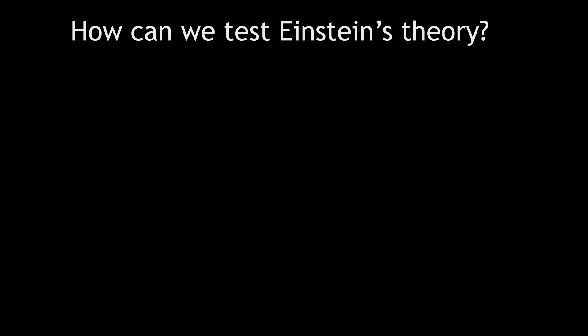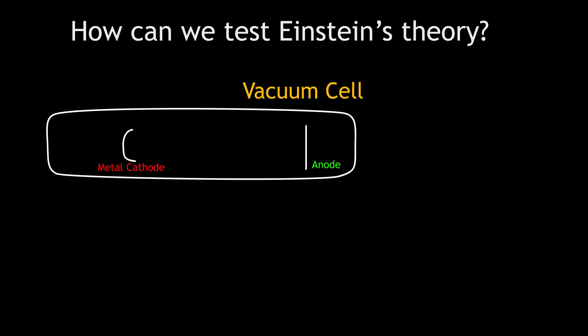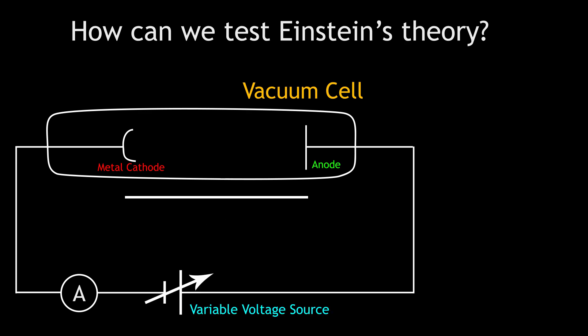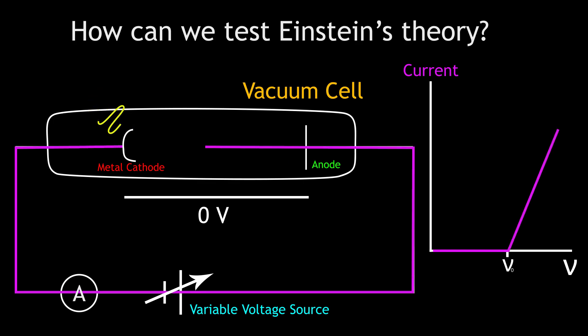To test Einstein's theory, we could imagine having a glass vacuum chamber with a metal cathode at one end and an anode at the other end, connected to an ammeter and a variable voltage source. If we don't apply any potential difference across the electrodes and then irradiate the cathode with some electromagnetic radiation, we can expect to see a current when the frequency of the radiation is above the threshold frequency.